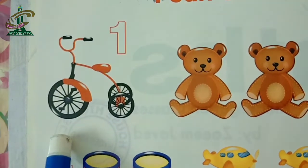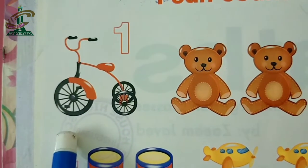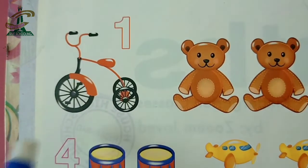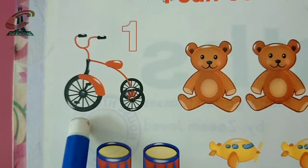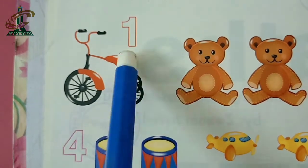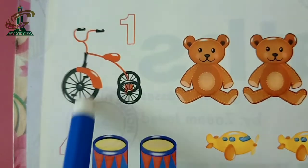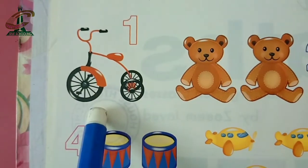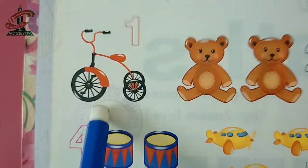What is this? Bicycle. Yes, right, bicycle. Now count the bicycles. How many bicycles are there? One. Just one. One bicycle.